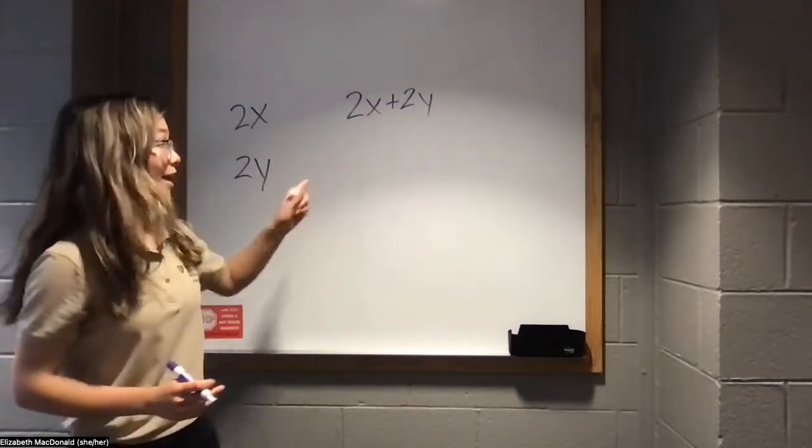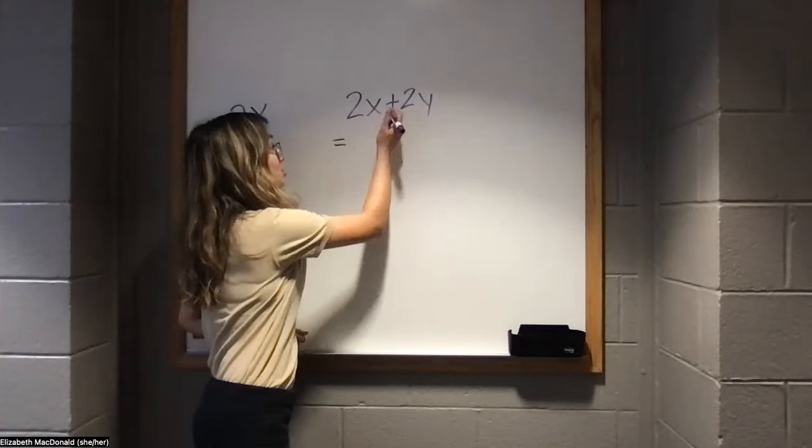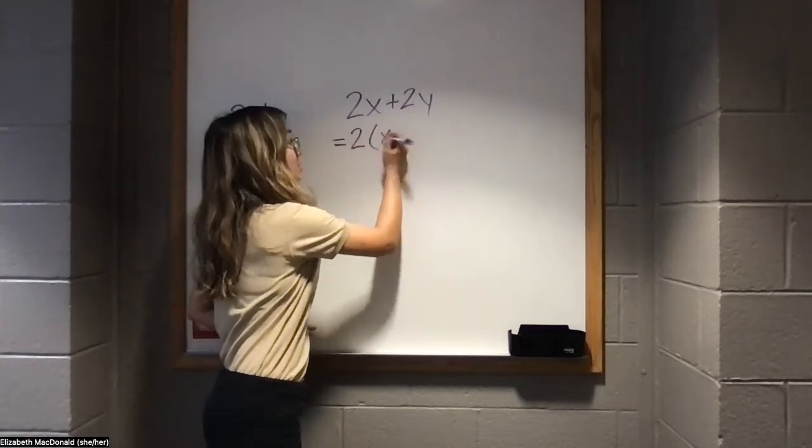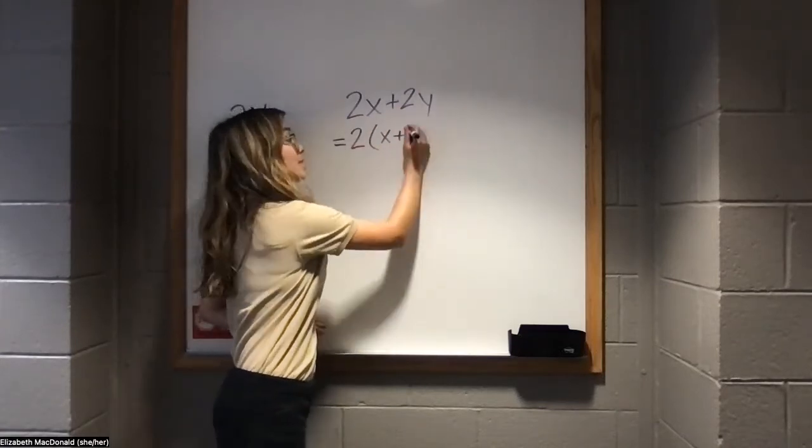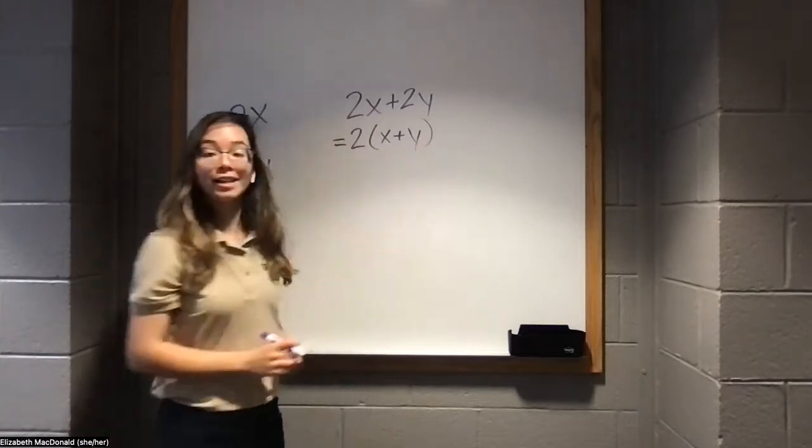Now, we'll take what they have in common and rewrite 2x plus 2y as 2 times the sum, the addition of x and y.